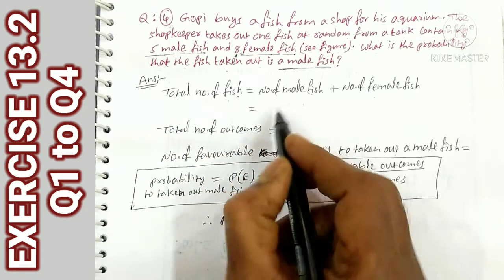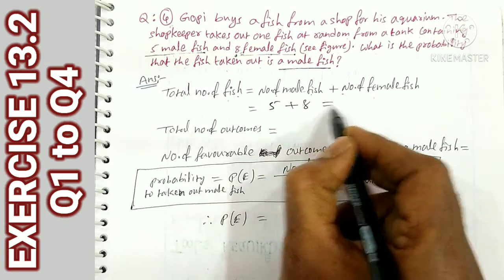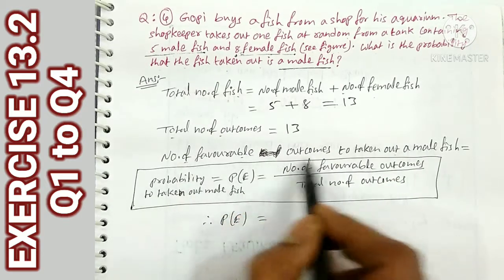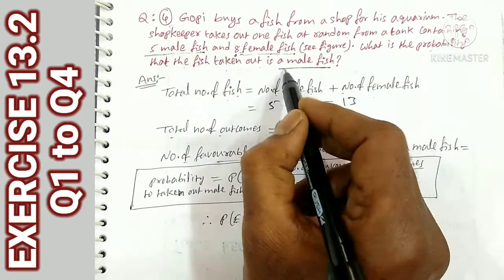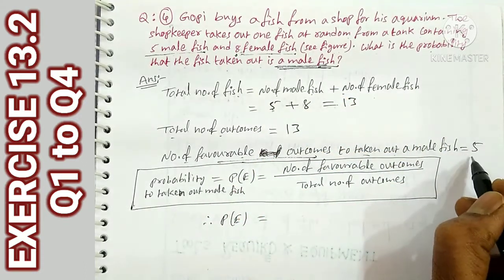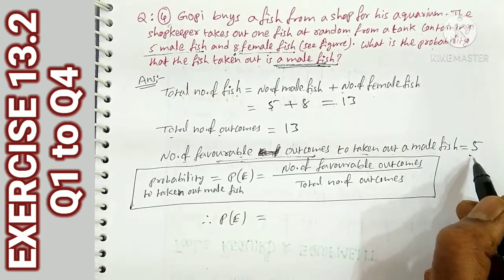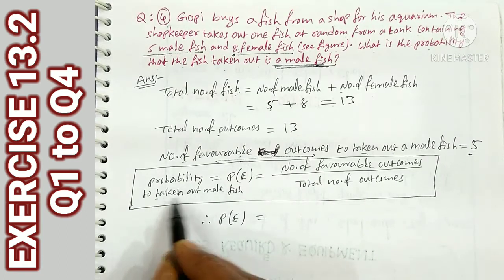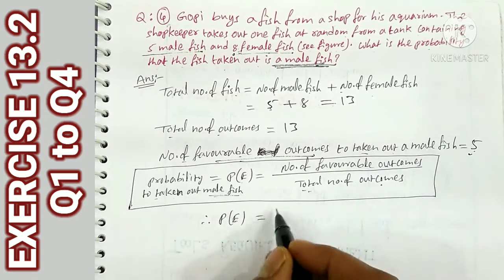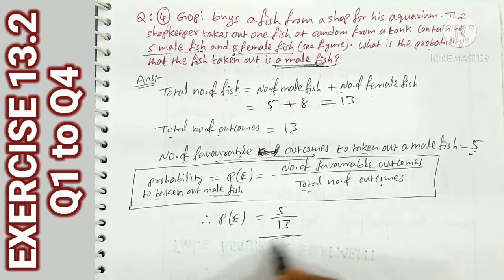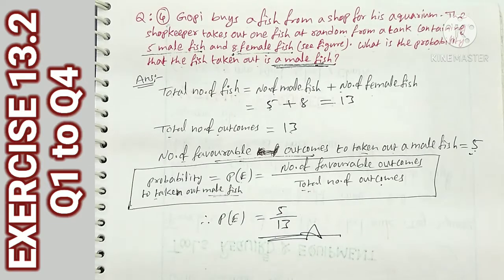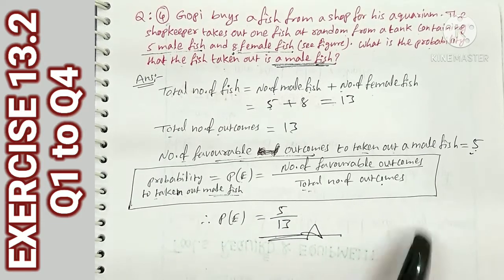The number of male fish is 5, the number of female fish is 8, total is 13. That is the total number of outcomes. The probability of getting a male fish = 5/13. That is the answer. We have practiced these four questions.